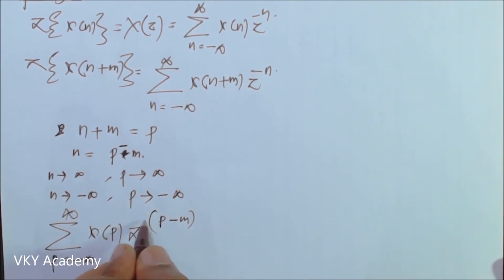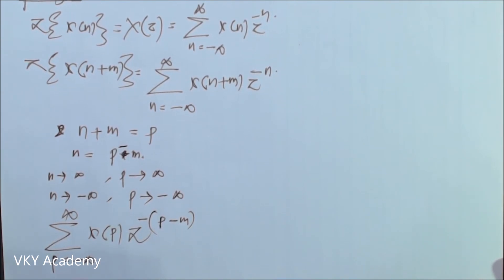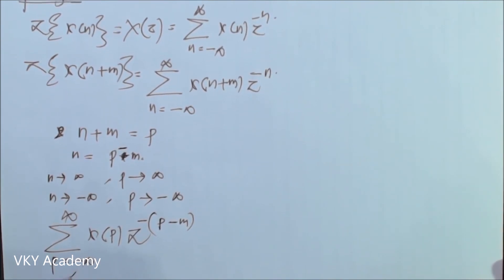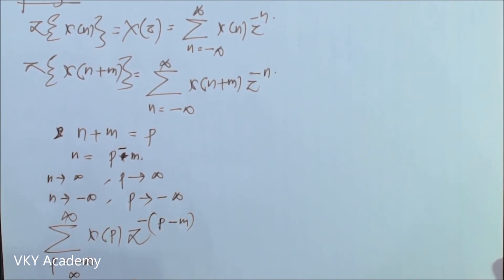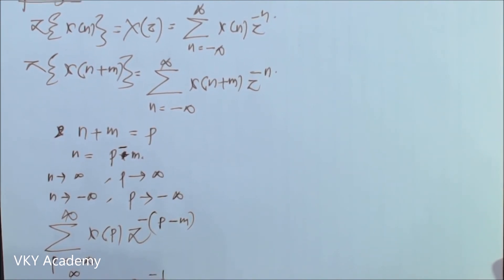So this will be p minus m, negative. This can be written as summation p equal to minus infinity to infinity of x of p times z to the power minus p, dot z to the power plus m.